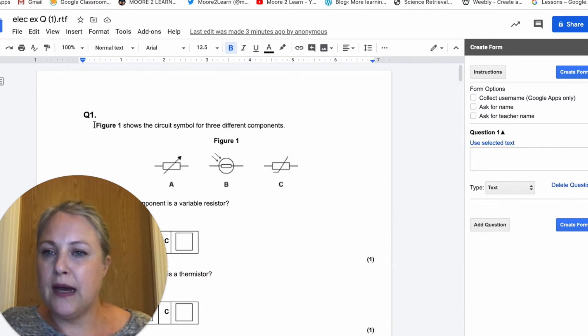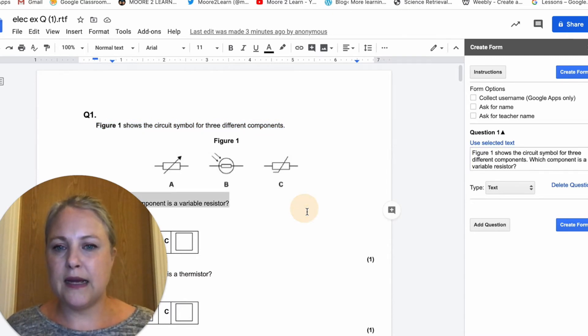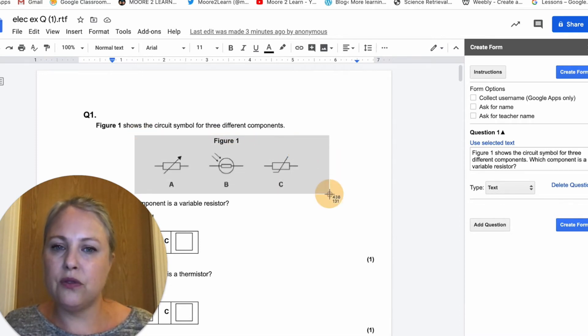So all you do is you highlight the bit that you want to turn into the question. So you select a test text to make my question. And I need the picture so I'm going to take a screenshot. You've got a snipping tool on your computer, or I'm using MacBook which is Control Shift 4.